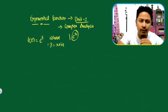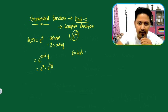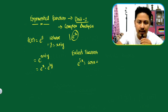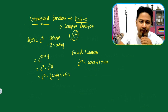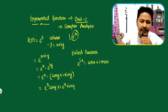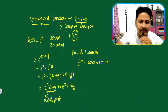Where z is x plus iota y. I can put it in e to the power x plus iota y. By Euler's theorem, e to the power ix equals cos x plus iota sin x. So this gives e to the power x into cos y plus iota e to the power x into sin y. So the real part is equal to e to the power x into cos y, and the imaginary part is equal to e to the power x into sin y.